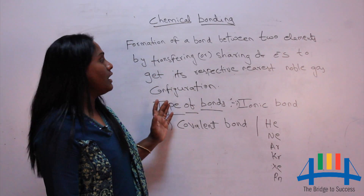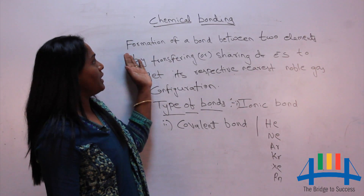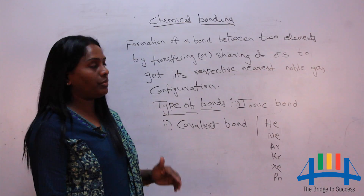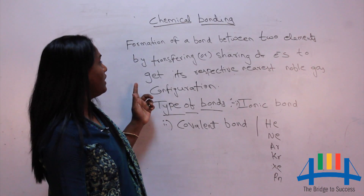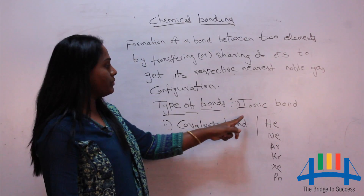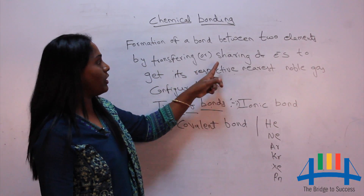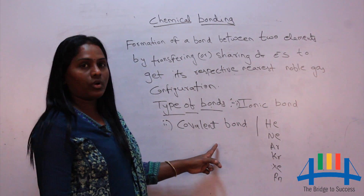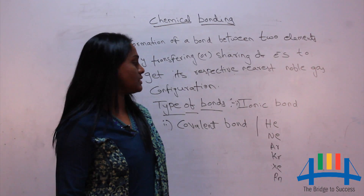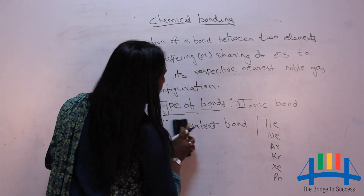Remaining elements try to get that noble gas configuration by forming bonds. There are two types of bonds: ionic bond, formed by transferring of electrons, and covalent bond, formed by sharing of electrons. Let's look at ionic bond now.